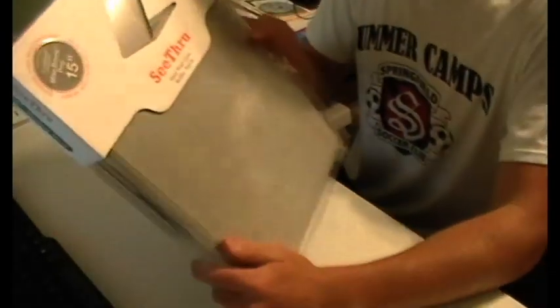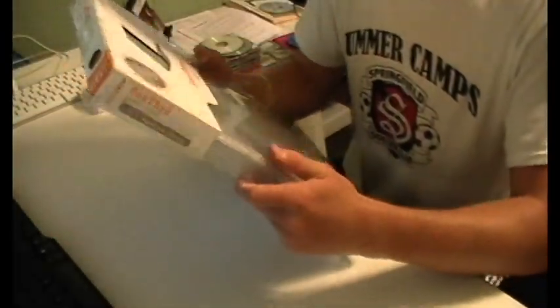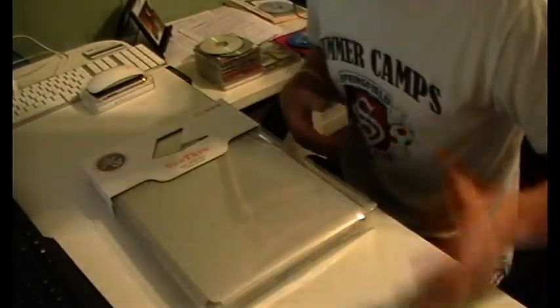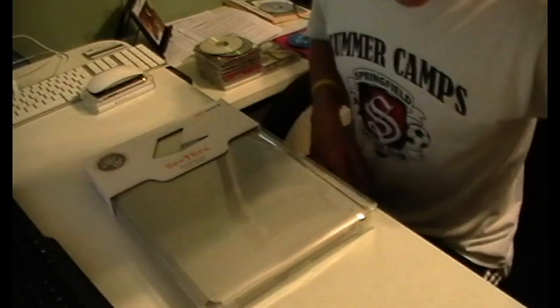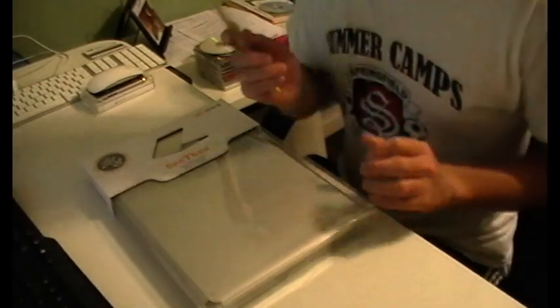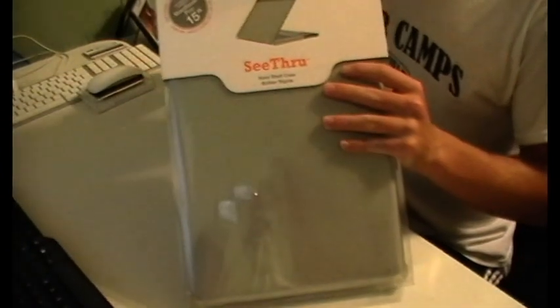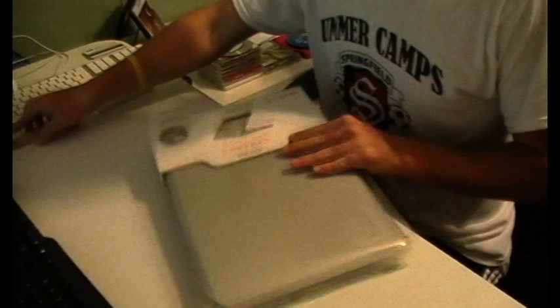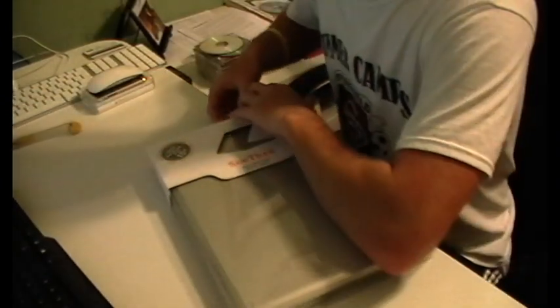Here's the case. It's a Speck see-through hard shell case for the aluminum unibody MacBook Pro 15 inch, which I don't have yet but I'll be getting this Friday. Then I plan on using this on my MacBook, and after a while I will do a review video, you know, pros and cons, what I think of it.